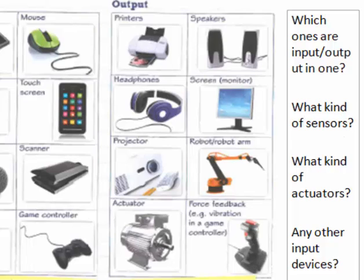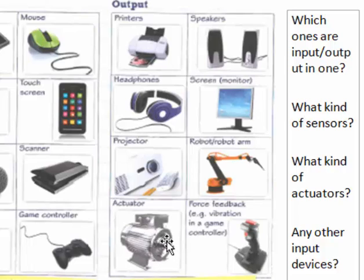We talked about different kinds of sensors already. Without sensors, automatic systems won't be able to work. Actuators — you turn electricity into rotational movements or sliding movements using these kinds of devices.